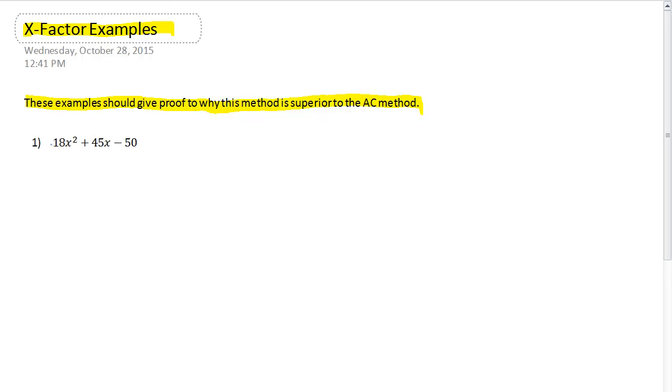And so I'm going to simply factor this trinomial right here, and by the x-factor method, I'm going to factor this into pairs. So I'm going to have 1x and 18x, 2x and 9x, 3x and 6x, and I believe those are all the factor pairs of 18. And then I'm going to make a little dividing line, and I'm going to factor the 50 now into its pairs. And so the pairs for 50 are 1 and 50, 2 and 25, 5 and 10. And I believe that's the only pairs for those.